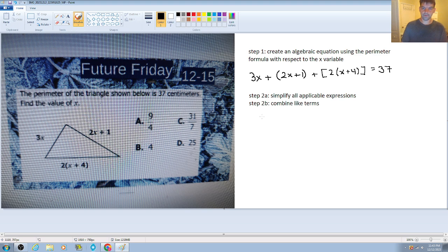So the first expression, we don't have to simplify. It already is. Same thing with the second one, but we can take it out of the parentheses. And then for the third expression, we do need to simplify that by using the distributive property. So we'll get 2x plus 8. And again, this is still an equation, so it's still equal to that 37.